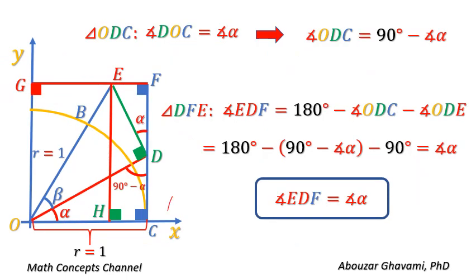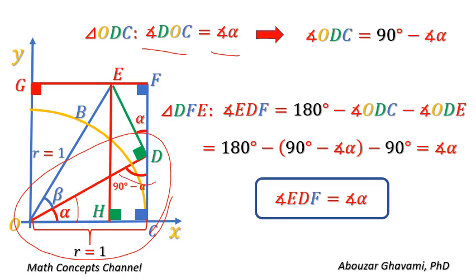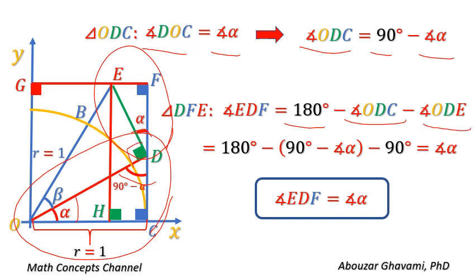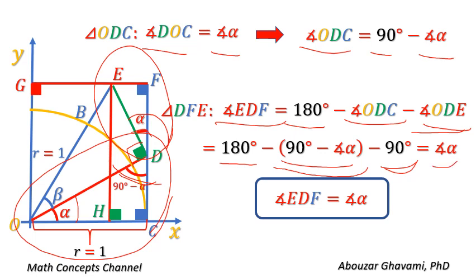In right triangle ODC, angle DOC equals angle alpha. Angle ODC equals 90 degrees minus angle alpha. Angle ODE equals 90 degrees. Thus, the size of angle EDF equals 90 degrees minus alpha, and angle FDE equals angle alpha. Therefore, angle EDF equals angle alpha.